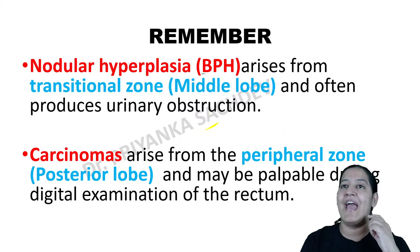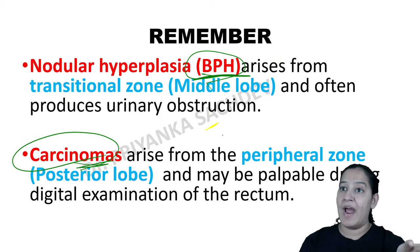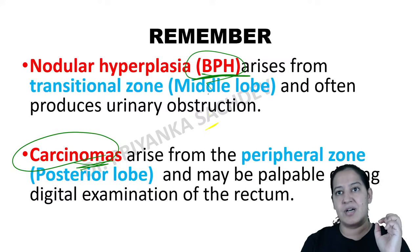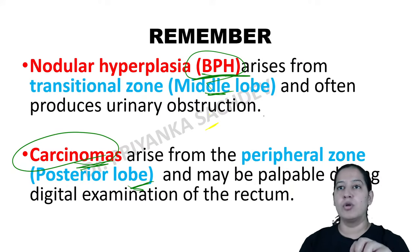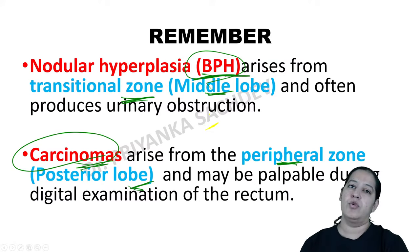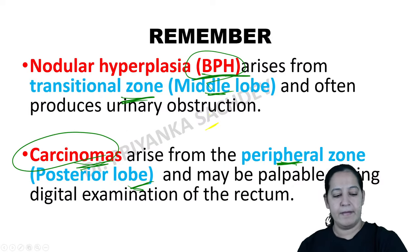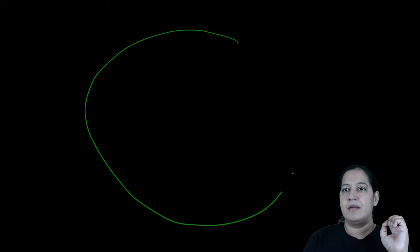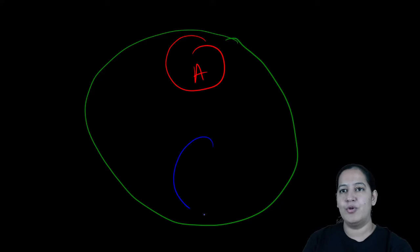Now let's talk about BPH and carcinoma — which lobe and which zone each occurs in. For lobes: BPH occurs in the middle lobe; carcinoma occurs in the posterior lobe. For zones: BPH occurs in the transitional zone; carcinoma occurs in the peripheral zone. I'll draw their exact locations to permanently clear your concept. BPH is in the middle lobe, transitional zone — PP for carcinoma: posterior lobe, peripheral zone.